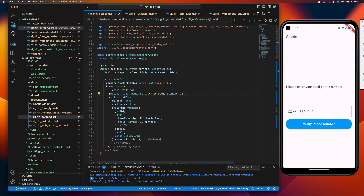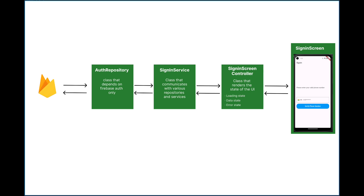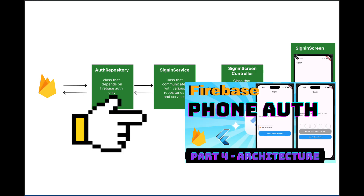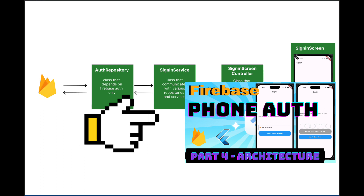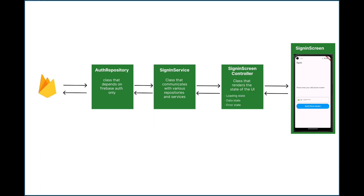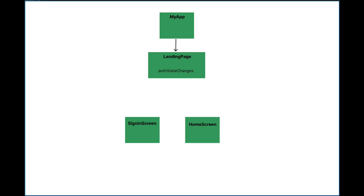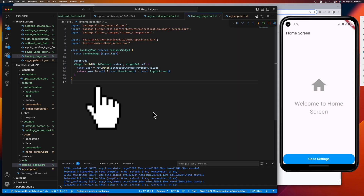We currently have a Firebase PhoneNote here that we have developed in our past videos. And here is the architectural diagram of our PhoneNote, which I have explained in my last video about Flutter PhoneNote architecture. The link to the video is in the description below if you're not familiar with it. What we've done here is to create a landing page where we listen to the auth state changes and redirect the user to the sign screen or home screen depending on the value of the auth state changes. This works as intended.